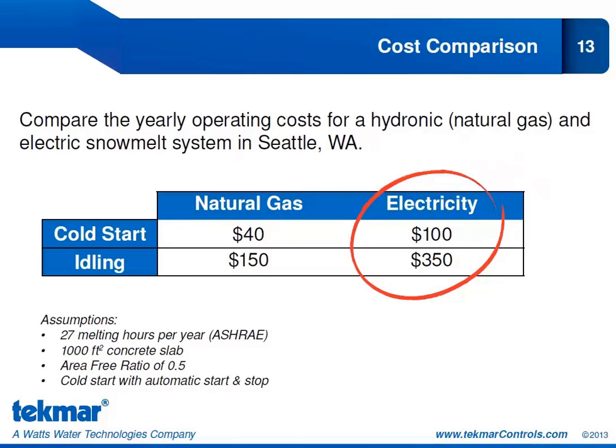Another cost comparison for a location with fewer snow melting hours: Seattle, Washington. According to ASHRAE, Seattle sees only 27 melting hours per year. Even though natural gas is still cheaper — $40 for a cold start with natural gas versus $100 for electricity — because the overall cost to operate with electricity is still so low, you're probably not going to see the return on investment needed to justify a hydronic system. In a climate like Seattle with few melting hours per year, you would likely want to install an electric snow melt system.